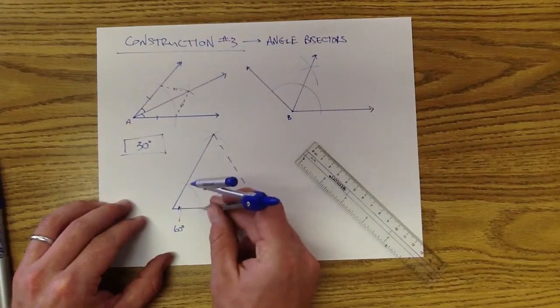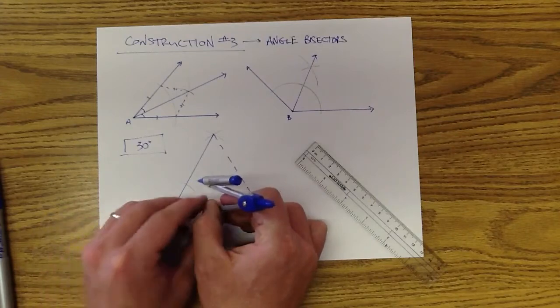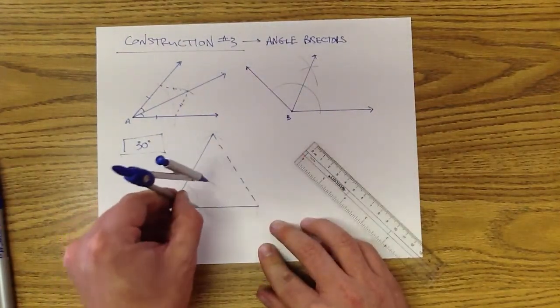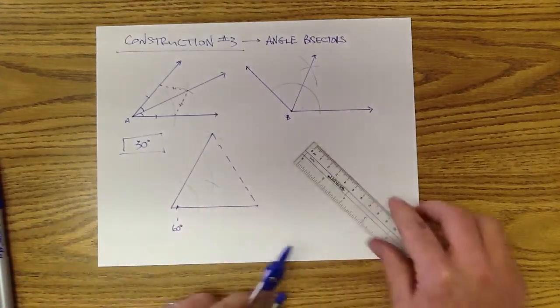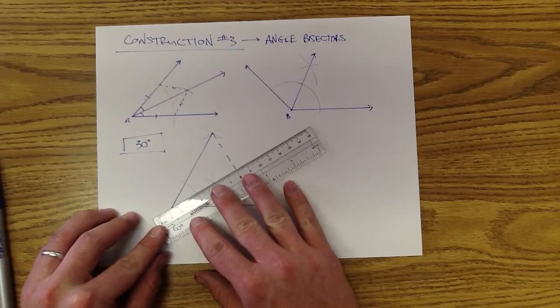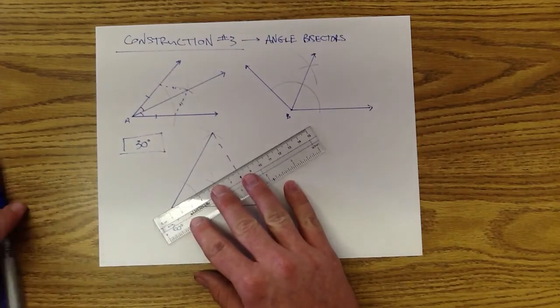Put the point of your compass. I have trouble doing this with my right hand. I need to switch to my left. Find the intersection of your arcs.